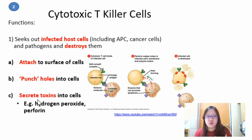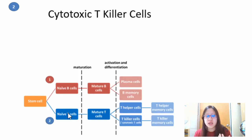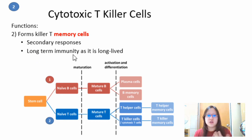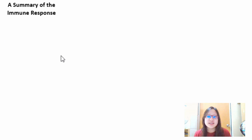The toxins secreted include hydrogen peroxide or perforin to kill the cell. Killer T cells also form killer T memory cells, which — like T helper memory cells — are involved in long-term immunity and enabling the secondary immune response.